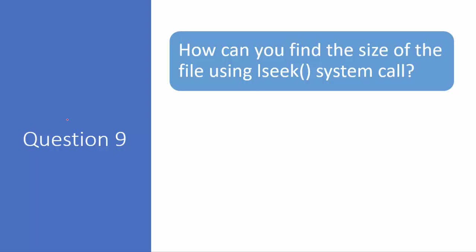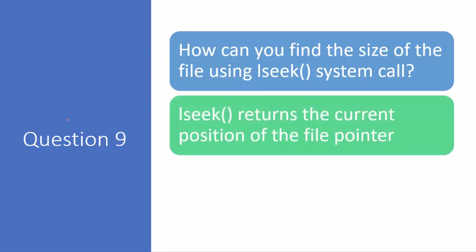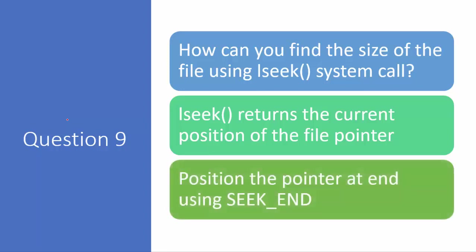Question number nine: how can you find the size of a file using the lseek system call? lseek returns the current position of the file pointer. To find file size, call lseek with the file descriptor, offset of minus one, and SEEK_END — this positions the pointer at the end of the file. Store the return value in an integer variable, and that value gives you the size of the file.